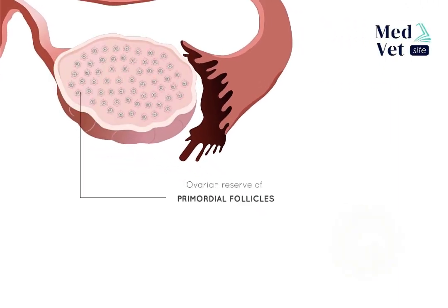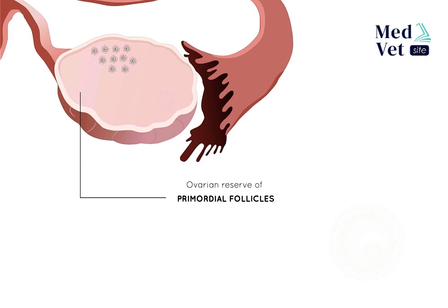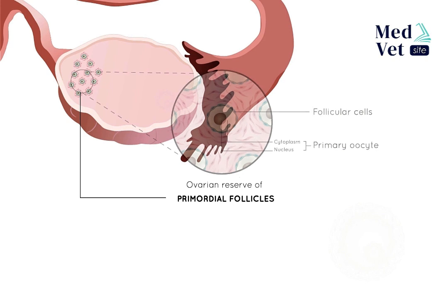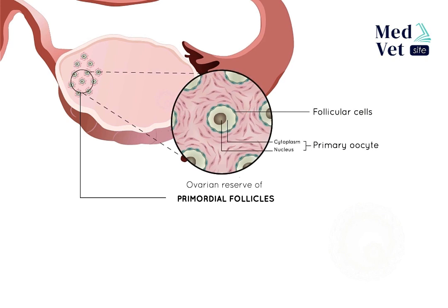Folliculogenesis is the development of follicles that are part of a reserve which has been in the ovaries of female mammals since they are born. Cohorts or groups of follicles develop cyclically from this reserve during the life of the female mammal. Each of these follicles houses a primary oocyte and is made up of follicular cells which surround the membrane of the oocyte.